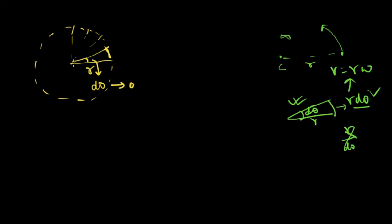When we take an arc that subtends an angle dθ tending to zero, we can very easily assume that this arc is actually a straight line. There will be some deviation, but it is so small that we can with good confidence assume the arc is a straight line. We can also assume that since this arc is a straight line, it makes an angle of 90 degrees with the radius.